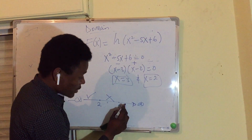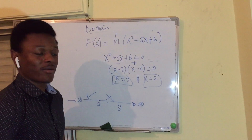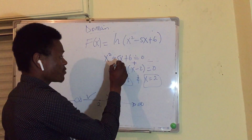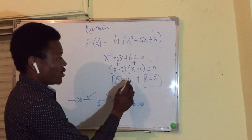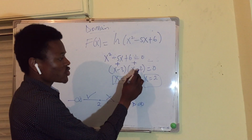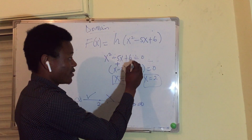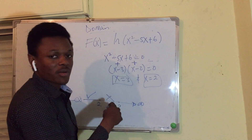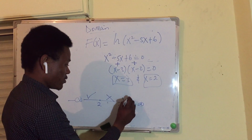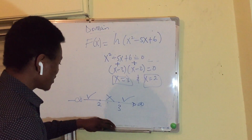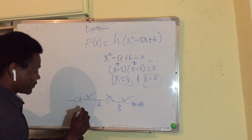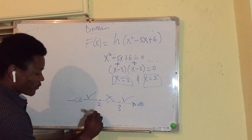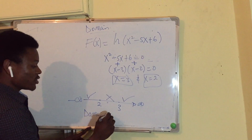Let us try x = 4, which is in the interval x > 3. We get 4 - 3 = positive and 4 - 2 = positive. Positive times positive is positive, so this interval is acceptable. Now let us write the domain.